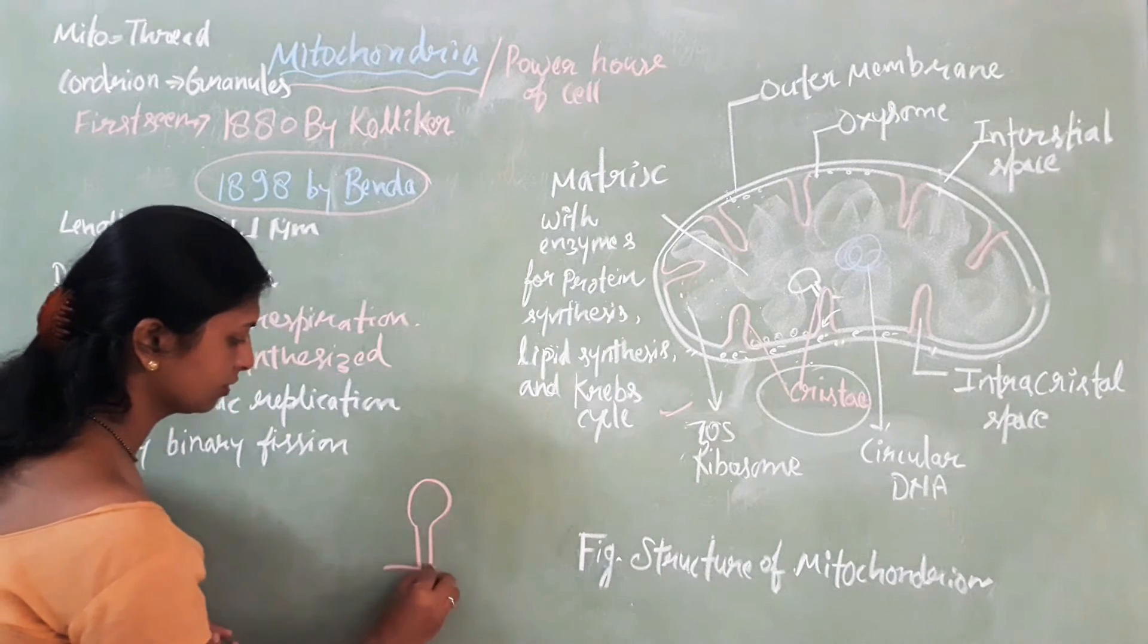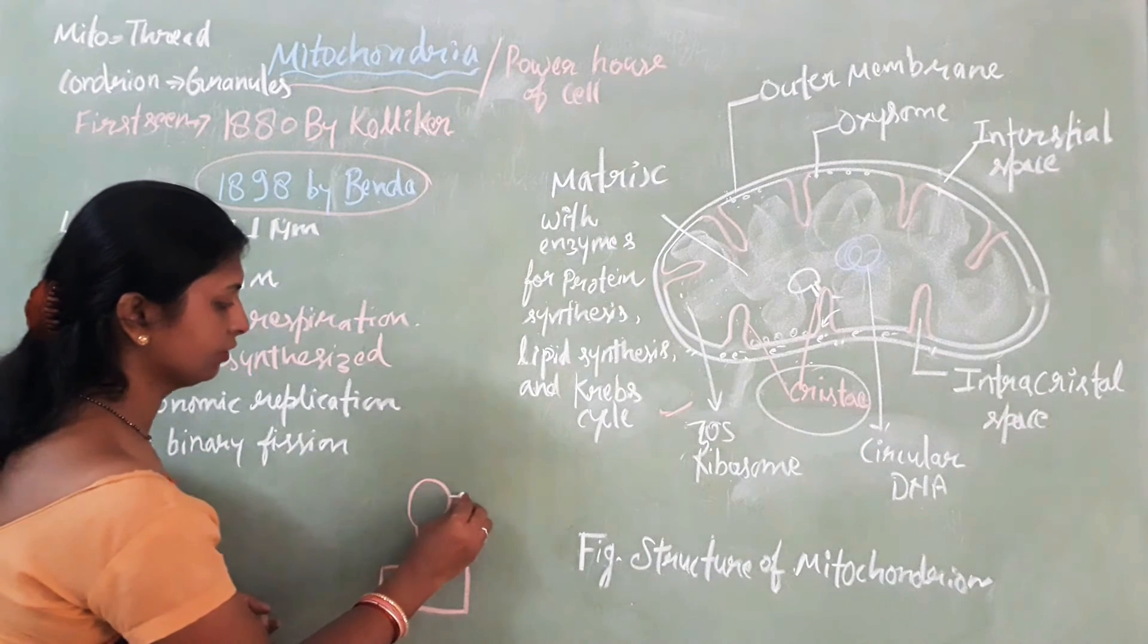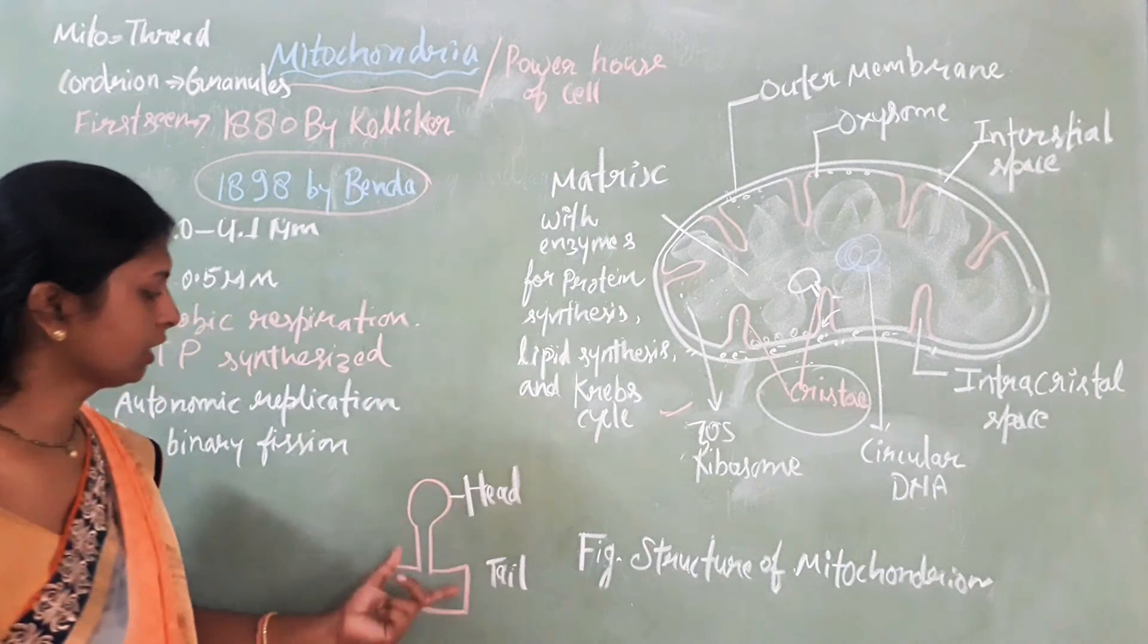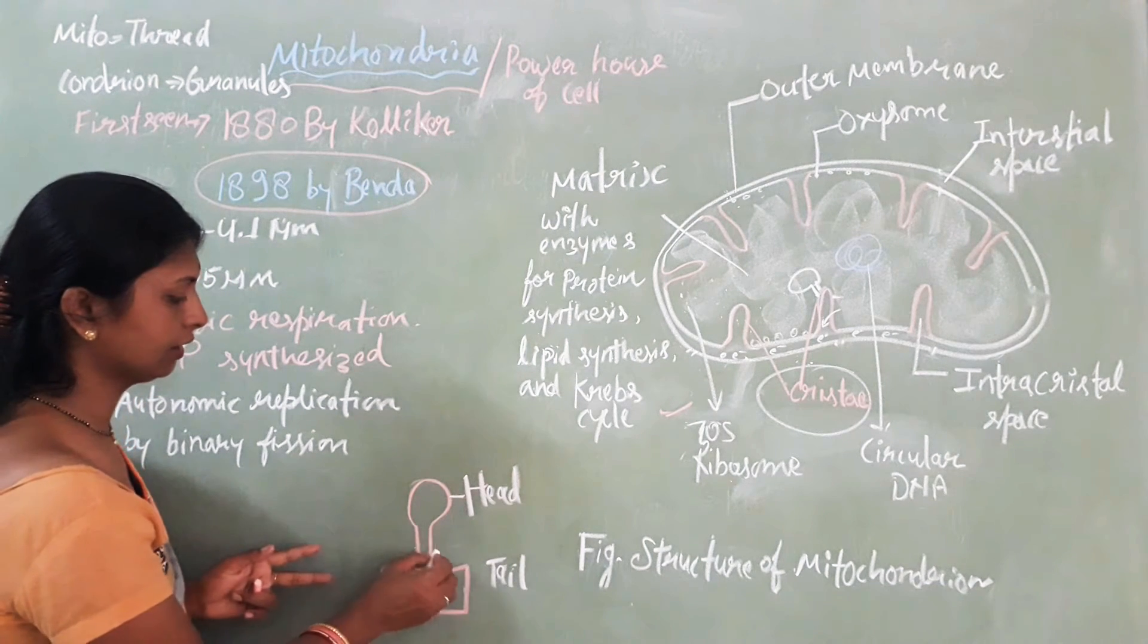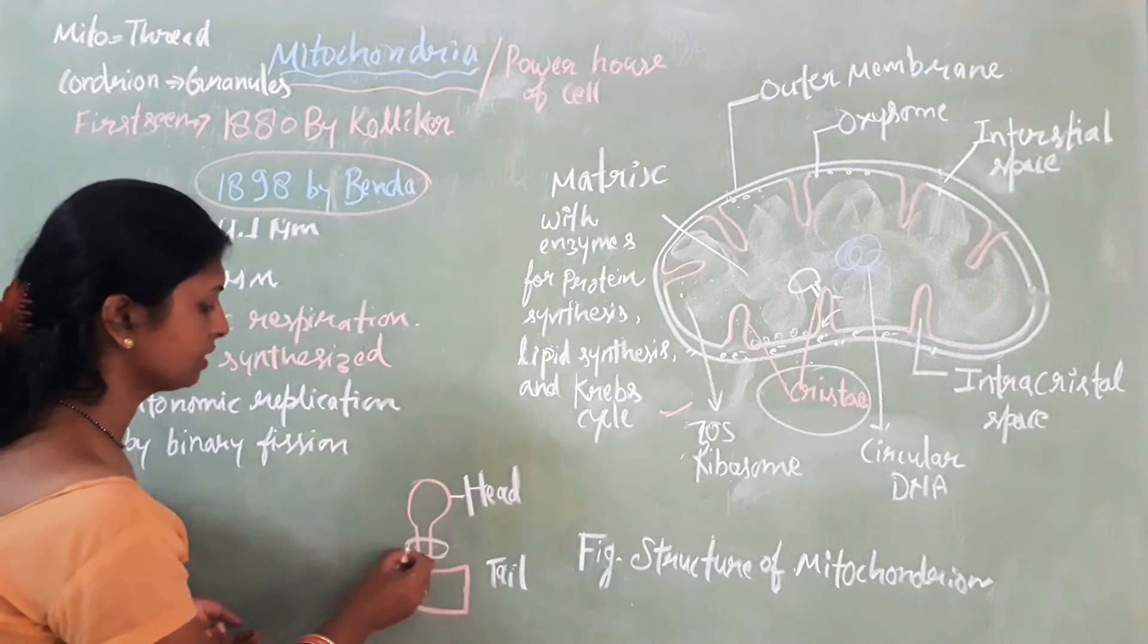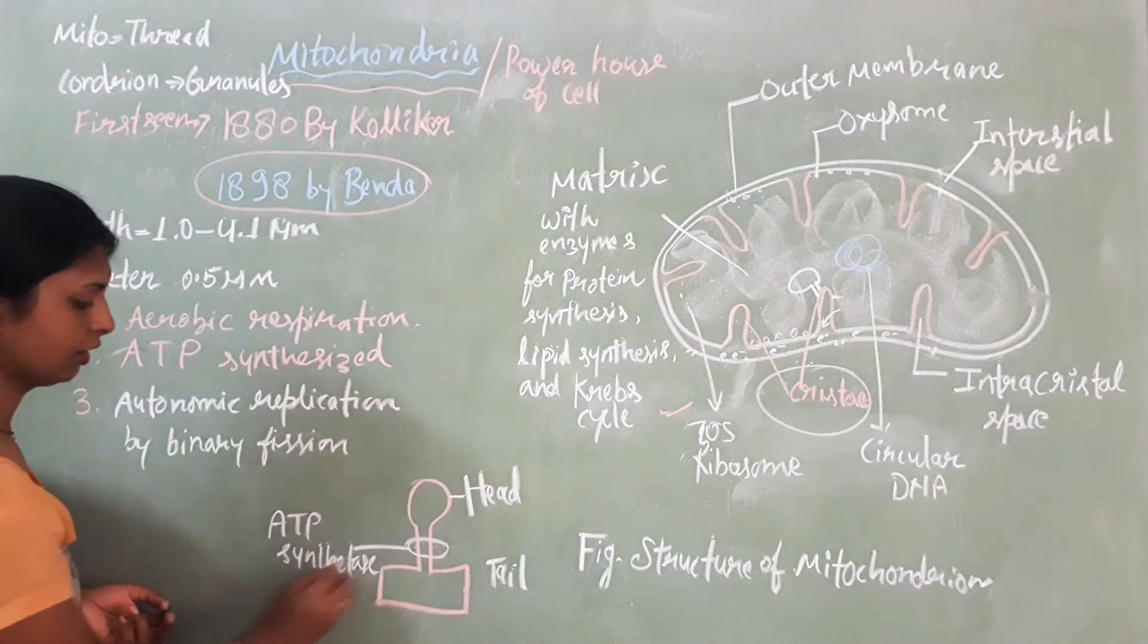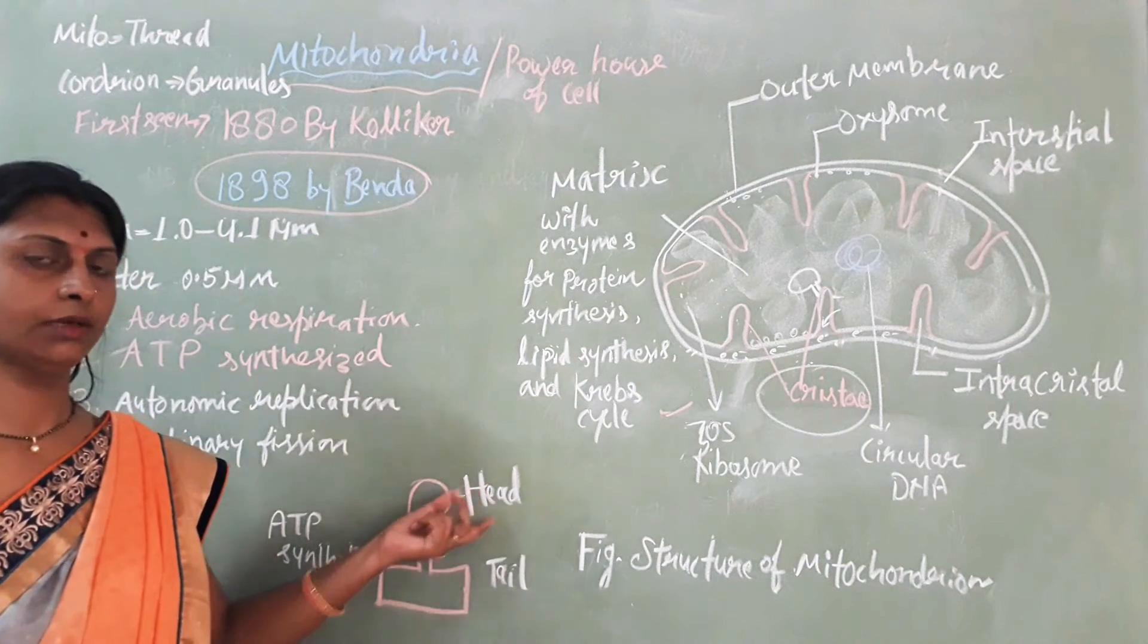The oxysome structure contains head region and tail region. The head is outside the membrane and the tail region is embedded inside the inner membrane. One enzyme is present inside it - ATP synthase enzyme. This enzyme converts ADP into ATP.